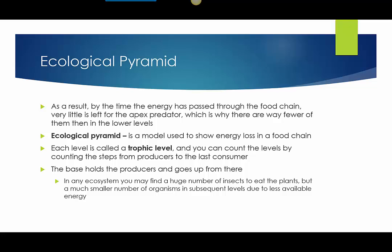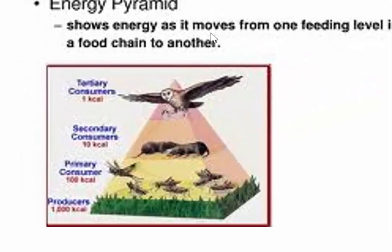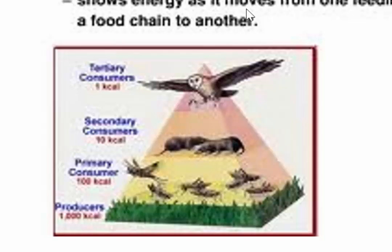The base holds the producers and goes up from there. In any ecosystem you find a huge number of insects that eat the plants, but a much smaller number of organisms at subsequent levels due to less available energy. Here's an ecological pyramid — the shape shows how the amount of useful energy entering each level decreases as it's used by organisms in that level. The consumers at the top, in this example our owl, have much less energy available to support them than those closer to the bottom.